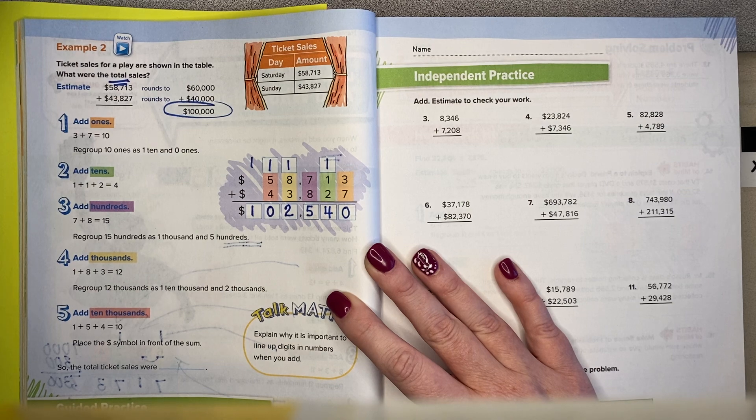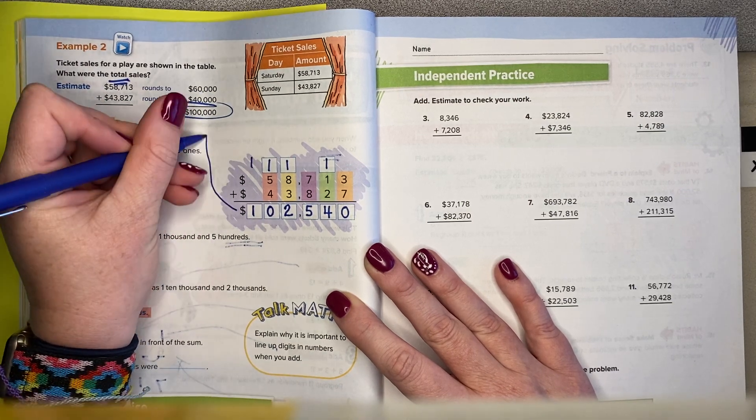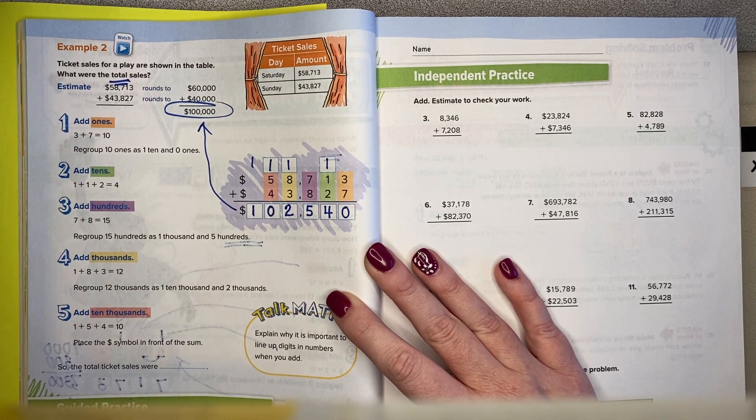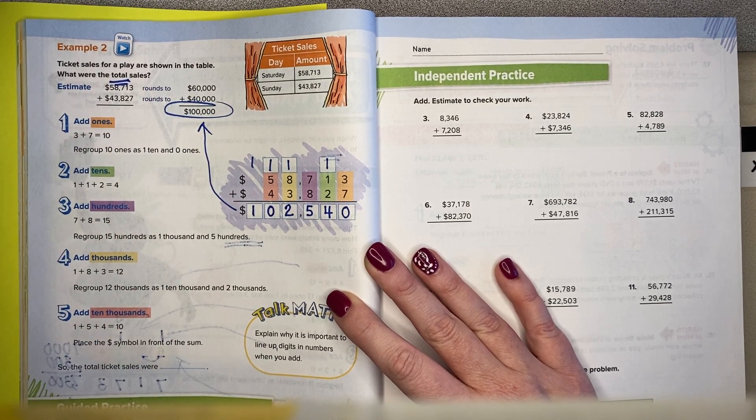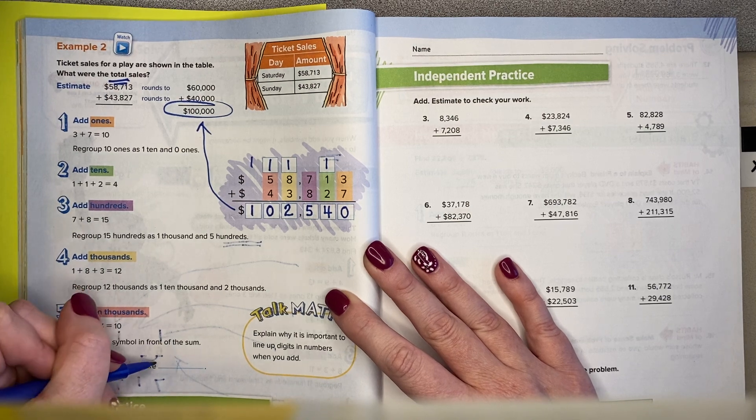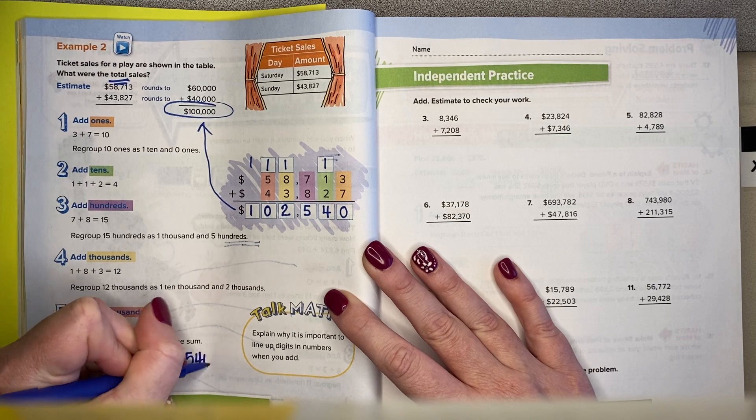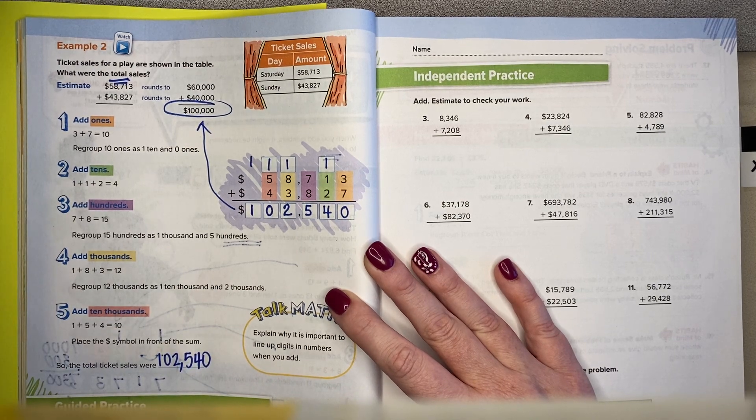So I can sort of check for reasonableness. Is $102,540 close-ish to $100,000? Yes, it's pretty close. So the total ticket sales were $102,540.